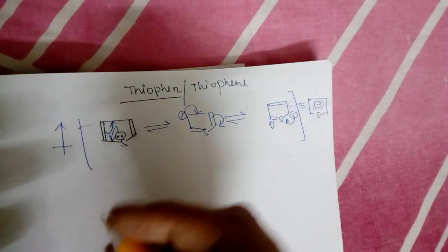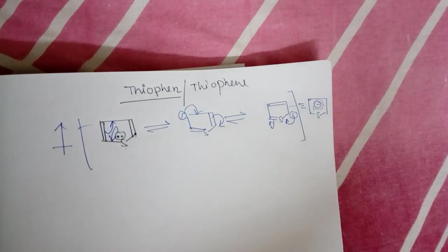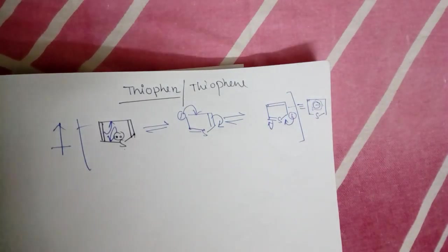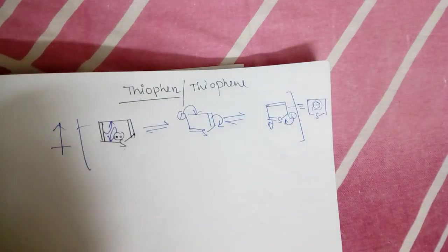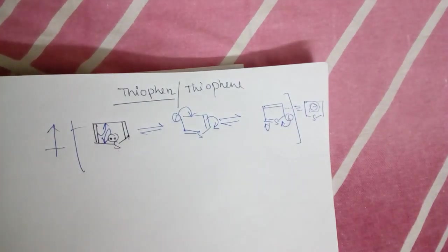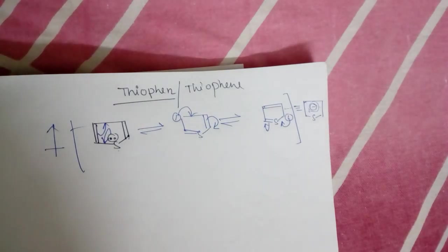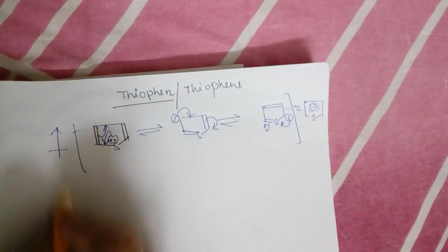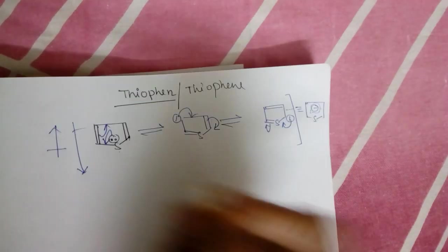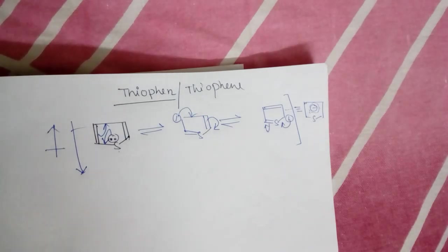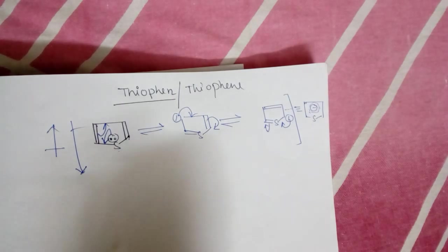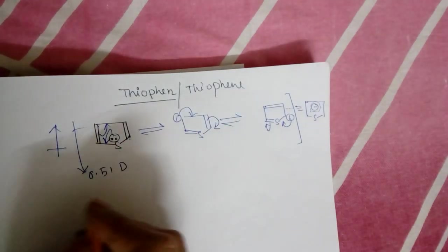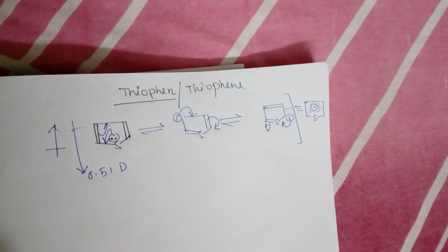But due to higher value of dipole moment due to pi electron movement, the resultant direction... no, sorry, actually pi electron movements are towards upwards, but due to electronegativity of sulfur, dipole moment also downward is present, and resultant dipole moment is actually towards sulfur, and the dipole moment value is 0.51 Debye. Now how can thiophene be prepared?